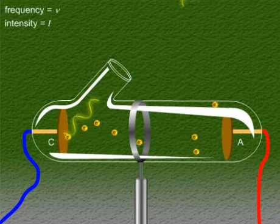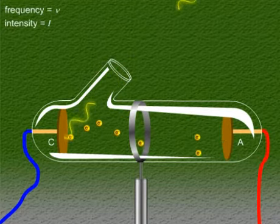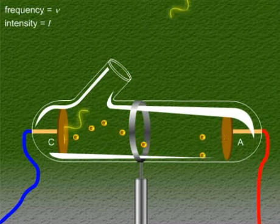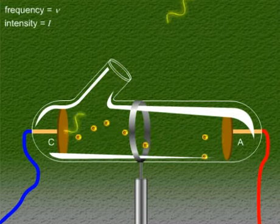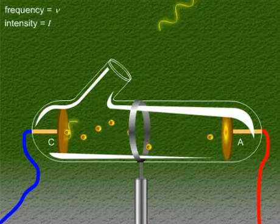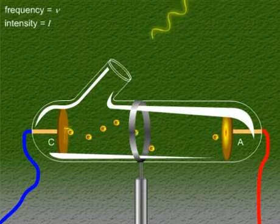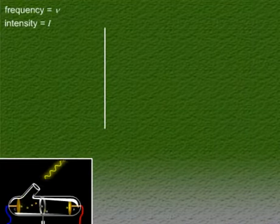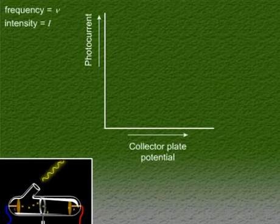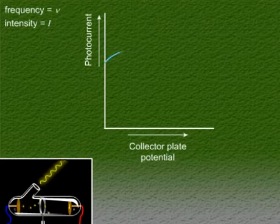Now we varied the positive potential of the collector plate gradually and measured the resulting photocurrent each time. As the positive potential of the collector increases, as you might have expected, more and more emitted electrons will reach the collector plate. Let's plot our photocurrent against the collector plate potential. The photoelectric current increases with increase in accelerating or the positive potential.